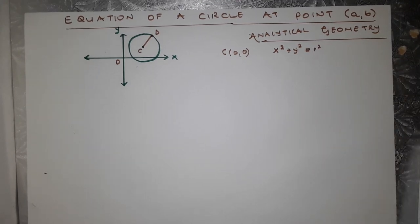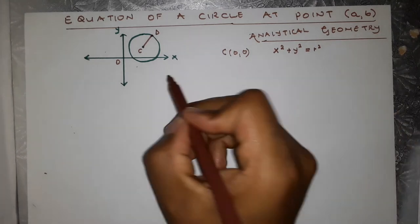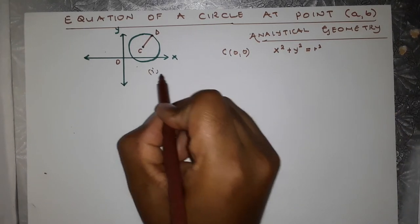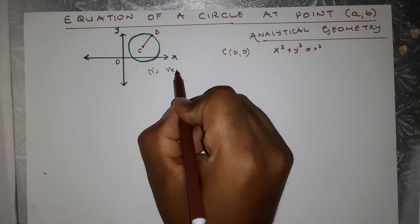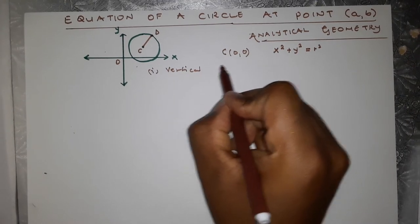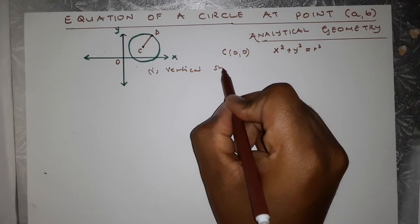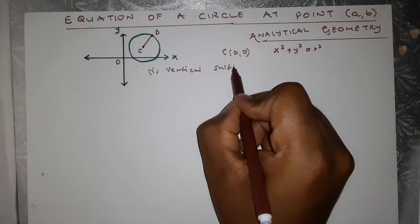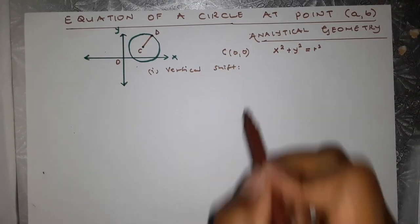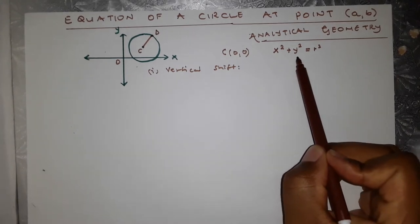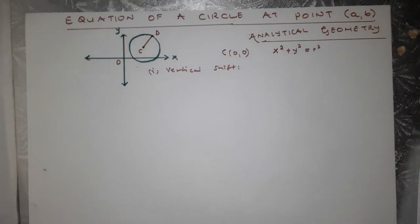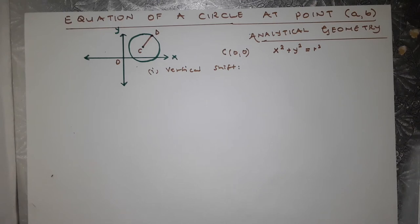But what is going to happen now if we shift the circle? Initially, let's say we have a vertical shift. Whenever we speak about a vertical shift, it's going to affect the y's.